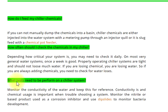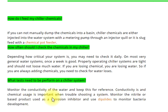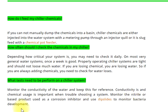What tests need to be performed on a chiller system? Monitor the conductivity of the water and keep this for reference. Conductivity and chemical usage data are important when troubleshooting a system. Monitor the nitrite-based product used as a corrosion inhibitor and use dip slides to monitor bacteria development.